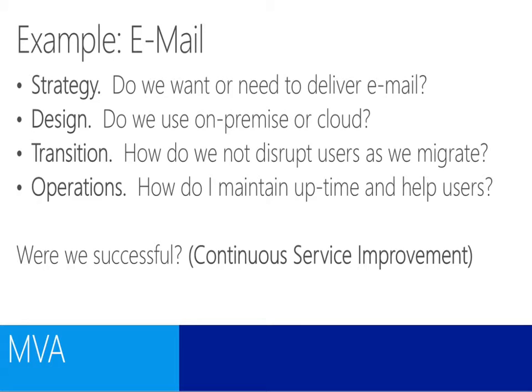If we take an example of email: do we want or need to deliver email? Clearly, we need to deliver email. The question is: do we use on-premise or cloud for our topology? How do I reconcile that? How do I not disrupt my users when I migrate them to the cloud, or migrate them from one version of on-premise Exchange to a new version? And finally, how do I maintain the uptime I'm promising to my business users? If I'm deploying on-premise for a particular reason, am I going to get the same uptime I would have gotten in the cloud? That's something you need to reconcile in the operational space.